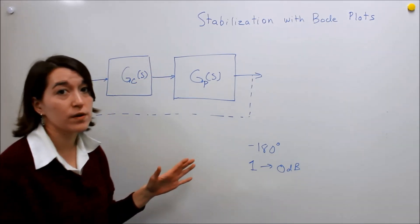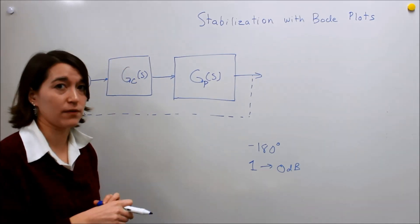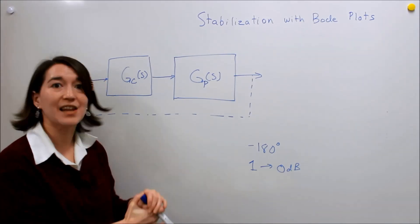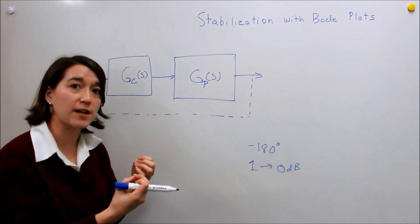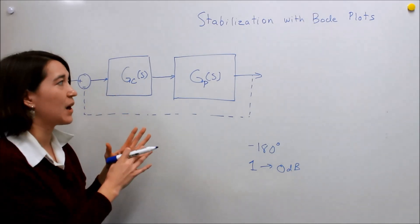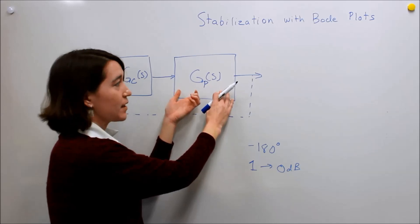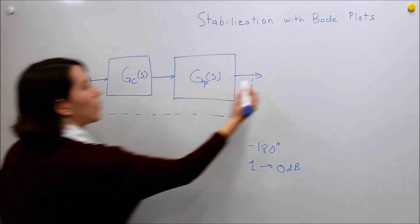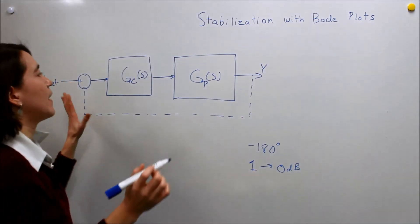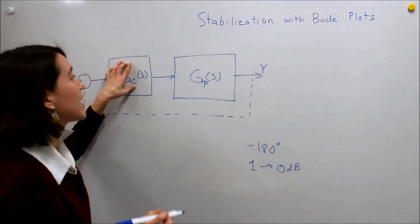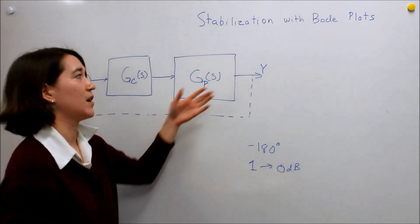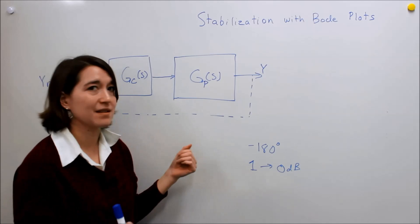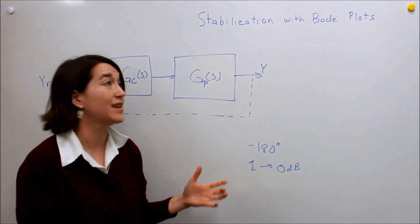This controller might be a proportional control, some sort of gain, or a few different types. There are some called lead, lag, and lead-lag — different types of controllers that are well studied in textbooks. Today I'm going to talk about if you have an unstable system in the plant — unstable in that if you connected it through this type of feedback — what kind of controller you can add to make sure that when you put everything together in feedback, your output will be stable. We're going to run over to MATLAB and look at a system, then talk about ways to stabilize it by looking at the Bode plot.